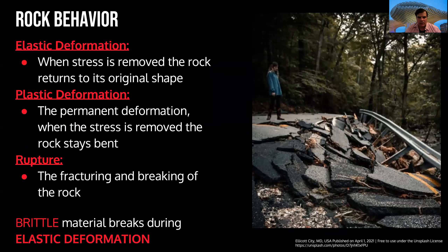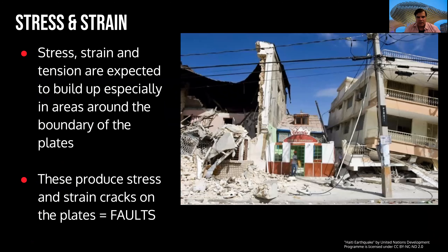The rock in the Earth will react and have some kind of behavior depending on the type of earthquakes and forces involved. We can have elastic deformation when the rock returns to its original shape, or plastic deformation when it has a permanent deformation — the stress is removed and the rock stays bent or deformed. Also, we'll have ruptures or breaking when a material is brittle and breaks during elastic deformation. When a material is very elastic, it will not break; it will deform and may return to the original form if the material is plastic.